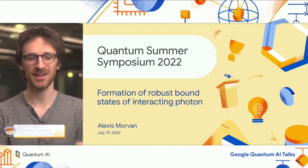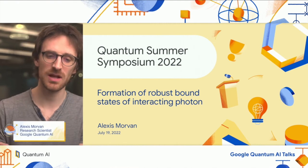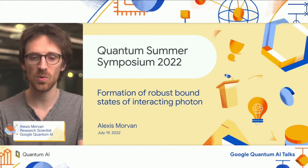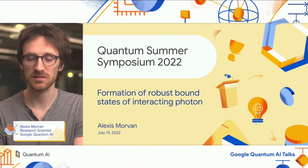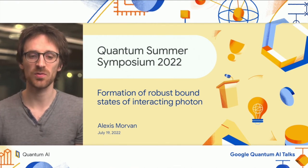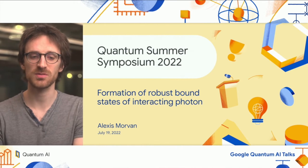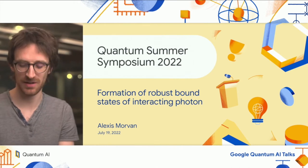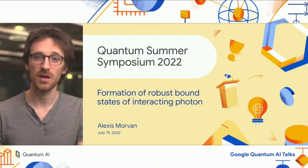Hi, my name is Alexis Morvin and I'm going to talk about work that we did here at Google Quantum AI about the formation of robust bound states of interacting photons.